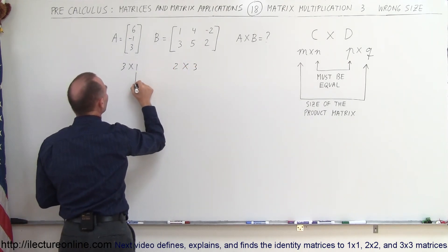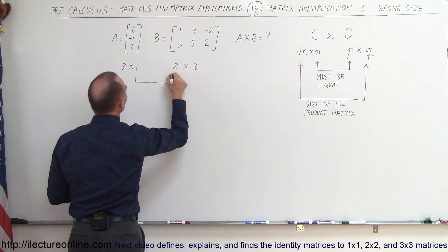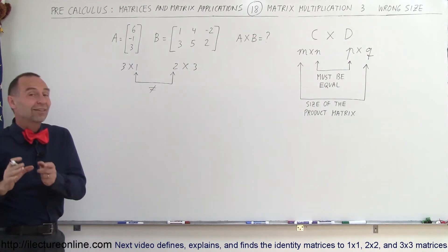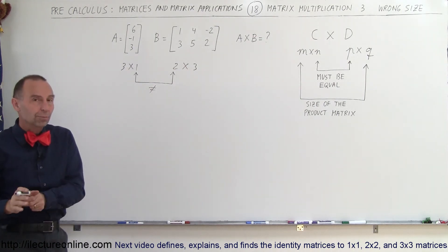So when we compare the number of columns of the first matrix to the number of rows of the second matrix, that number is not equal. And since that's not equal, you cannot multiply the two matrices.